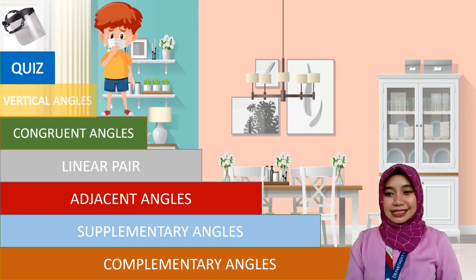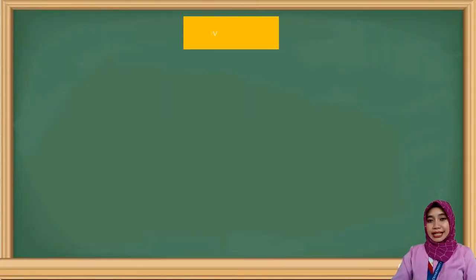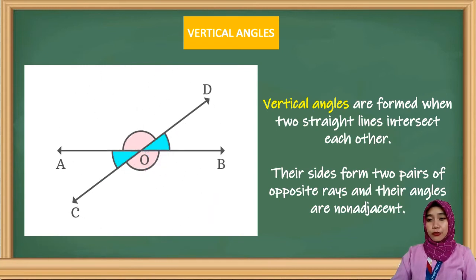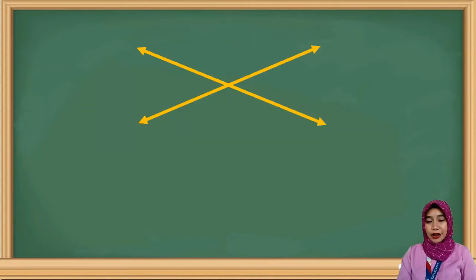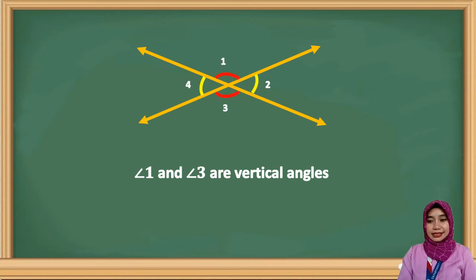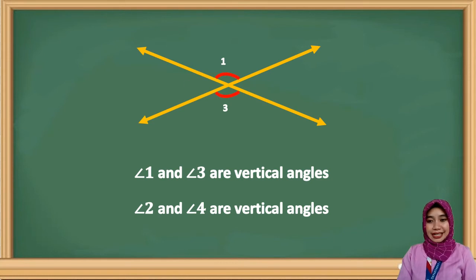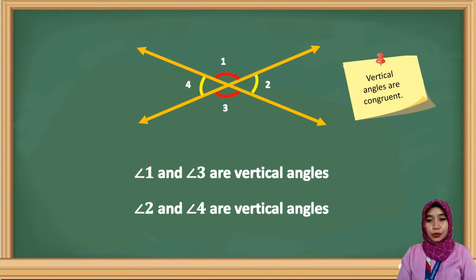Now let's proceed to vertical angles. Vertical angles are formed when two straight lines intersect each other. Their sides form two pairs of opposite rays and their angles are non-adjacent. For example, two intersecting lines form four angles: angles 1, 2, 3, and 4. Angle 1 and angle 3 are vertical angles, and angle 2 and angle 4 are vertical angles. Vertical angles are also congruent. Therefore, angles 1 and 3 are congruent, and angles 2 and 4 are congruent.